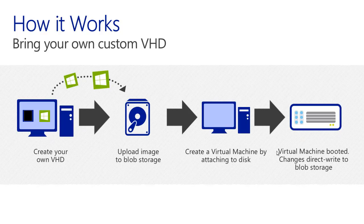You have more options than using just the images in the virtual machine image gallery. You can also bring your own VHD. The way you do it is to have a VHD formatted using Hyper-V, upload it to your blob storage, and then create a virtual machine by attaching your machine to the disk you just uploaded. Then you can boot that machine and carry on using it.